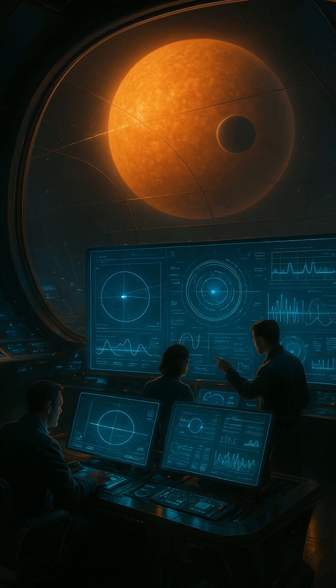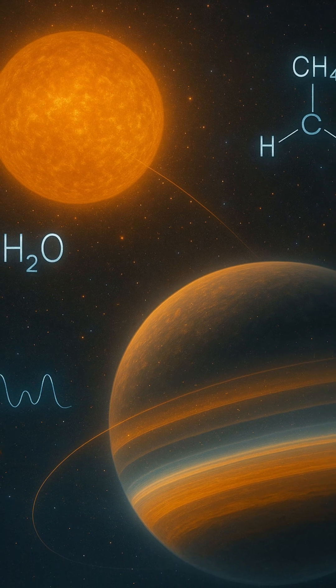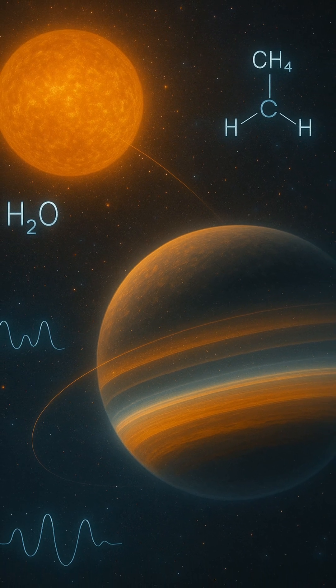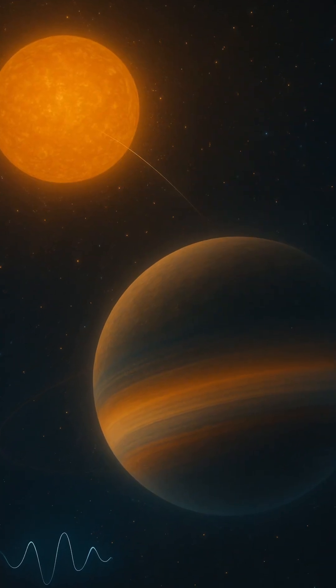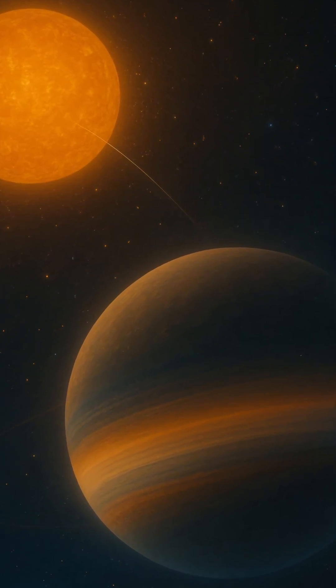By studying these lines with powerful space telescopes like the Hubble or the James Webb Space Telescope, JWST, scientists can identify which gases are present. Water vapor, methane, carbon dioxide, and even exotic compounds like titanium oxide have been detected this way.